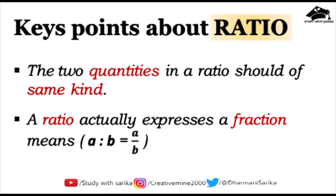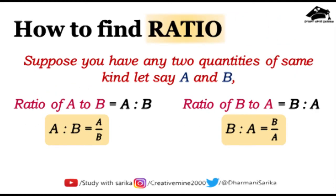So how do we find a ratio? Ratio is about comparing two quantities. Suppose you have two quantities A and B of the same kind. There are two ways to compare them: either you can write the ratio of A to B, or the ratio of B to A. The difference between these two is in how they are written fractionally.